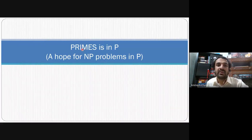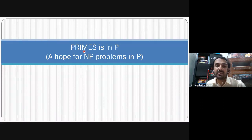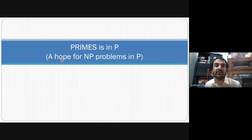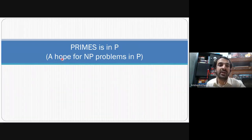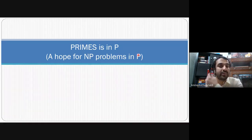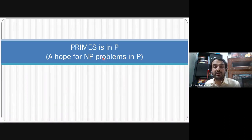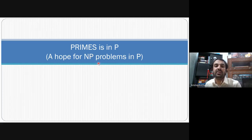Today we will start discussing PRIMES in P, which means finding out primes in polynomial time — detecting whether a given number is prime in polynomial time. This algorithm is a hope for solving NP problems in polynomial time. Before this solution came out, people thought that primality testing could only be done in non-polynomial time.